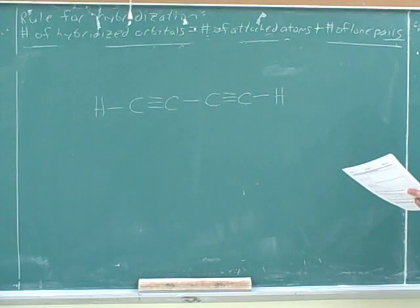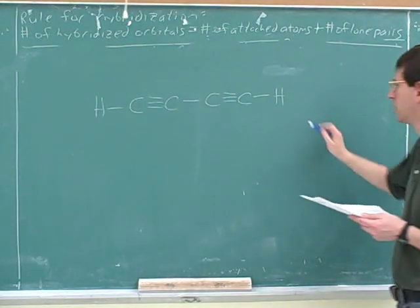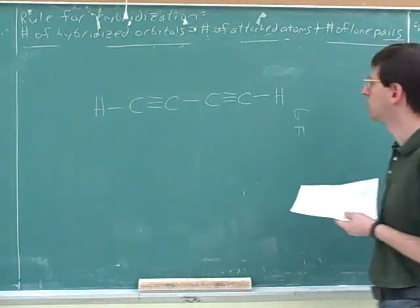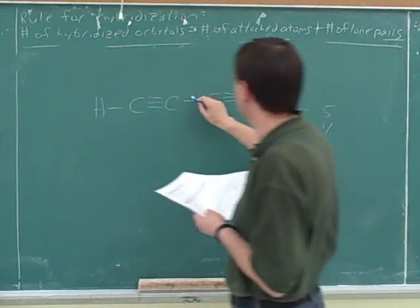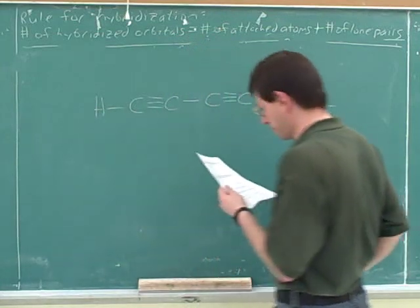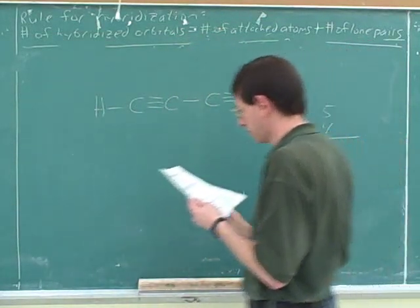How many sigma and pi bonds do we have here? Five sigma bonds and four pi bonds. One, two, three, four, five sigma. One, two, three, four pi bonds. Great.